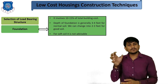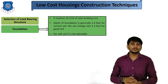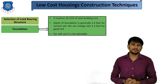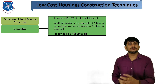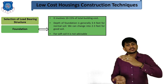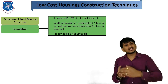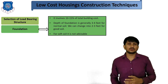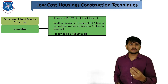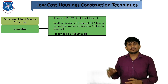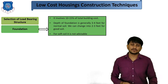If you save cost in the foundation, you also save cost in the overall building. The depth of the foundation is generally 3 to 4 feet for normal soil. We can change it to 2 to 3 feet for good soil by soil investigation, saving 1 to 2 feet in foundation depth. For soft soil, it is not advisable to decrease the foundation depth.